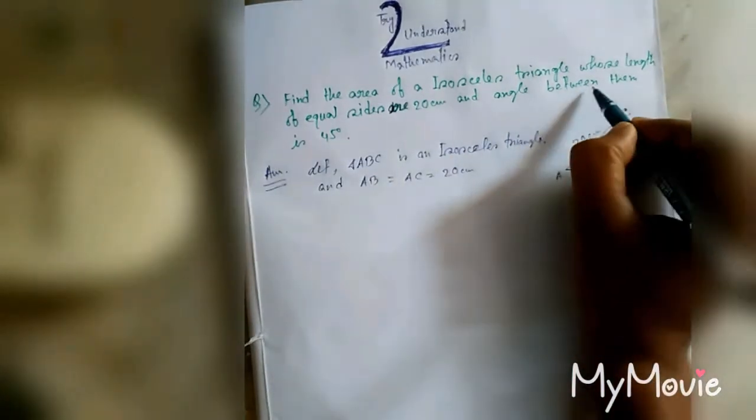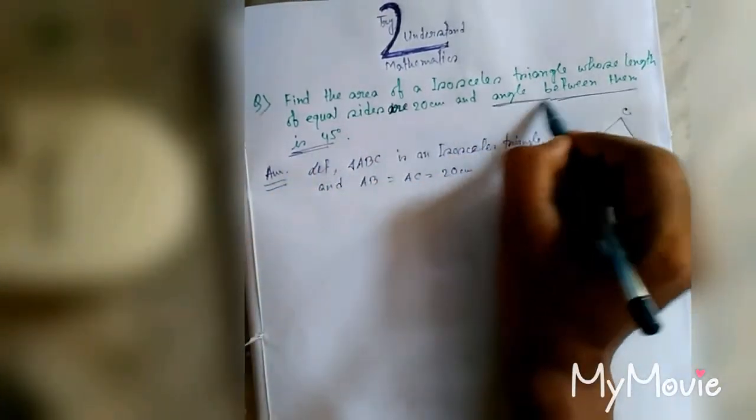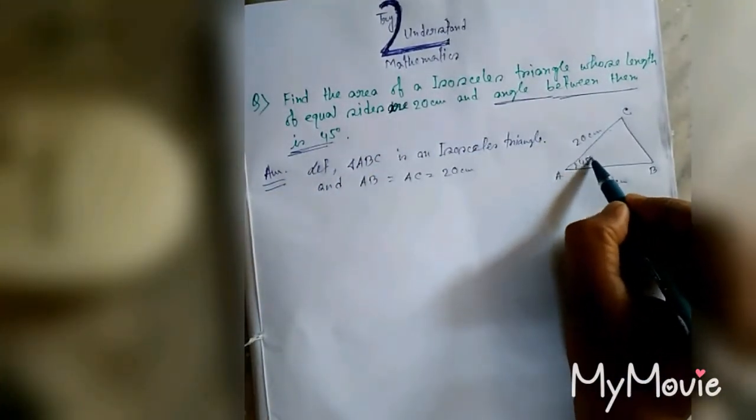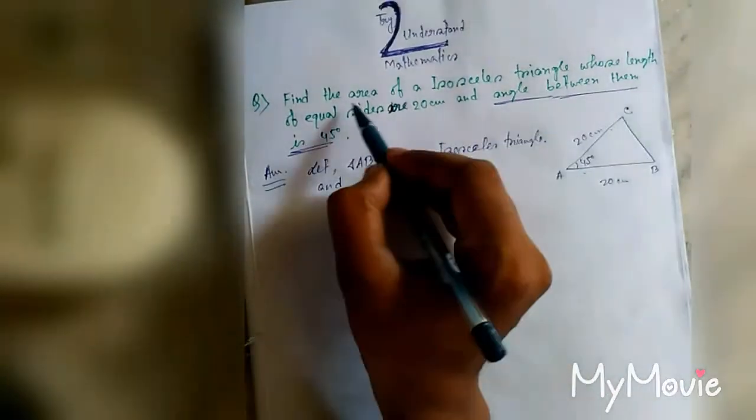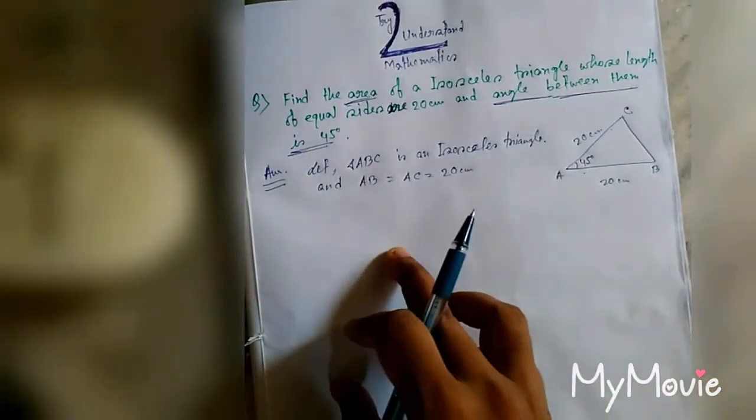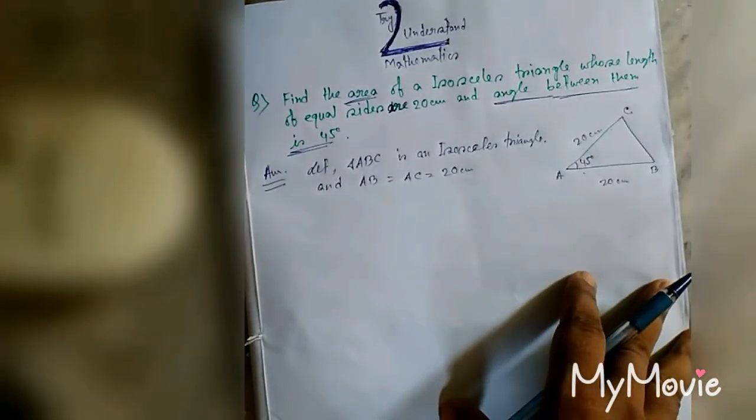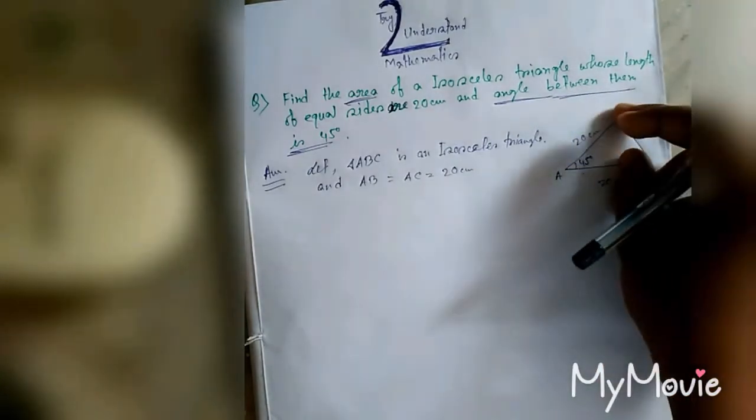Also there is a condition: angle between them is 45 degrees. Now we find area. The area of a triangle formula is half into base into height. Here the base is known but height is not known.